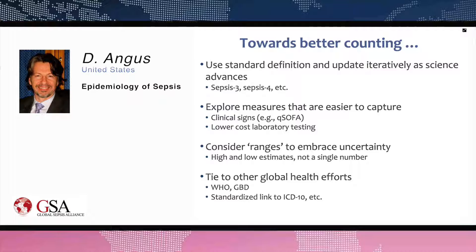Thank you for that very nice talk, Derek. I have a question: what do you think is going to happen with measuring the burden of sepsis in epidemiological studies now with Sepsis-3, mainly in studies that use administrative data? Administrative coding data in the United States essentially says sepsis is infection leading to acute organ dysfunction, which is still the essence of the Sepsis-3 definitions. In a way, Sepsis-3 could help solidify and standardize the way people write down the presence of acute organ dysfunction and infection. They didn't tackle the definition of infection — that's been tackled previously by infectious disease groups and the CDC.